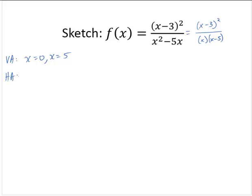Horizontal asymptote, notice that the degree of the numerator is 2 and the degree of the denominator is 2, so we take the ratio of the lead coefficients. If we were to multiply that x minus 3 squared out, we'd have an x squared, so the lead coefficient is 1. And in the denominator, the lead coefficient is 1, so y equals 1.